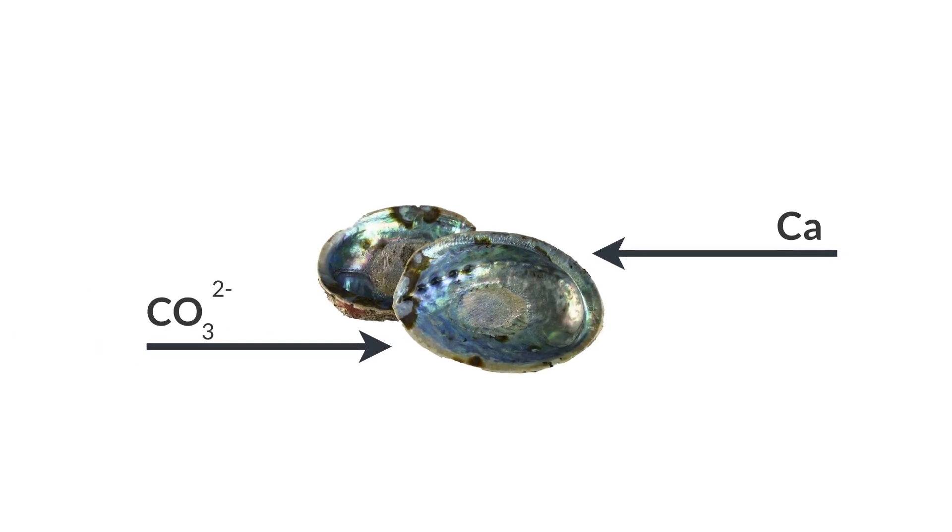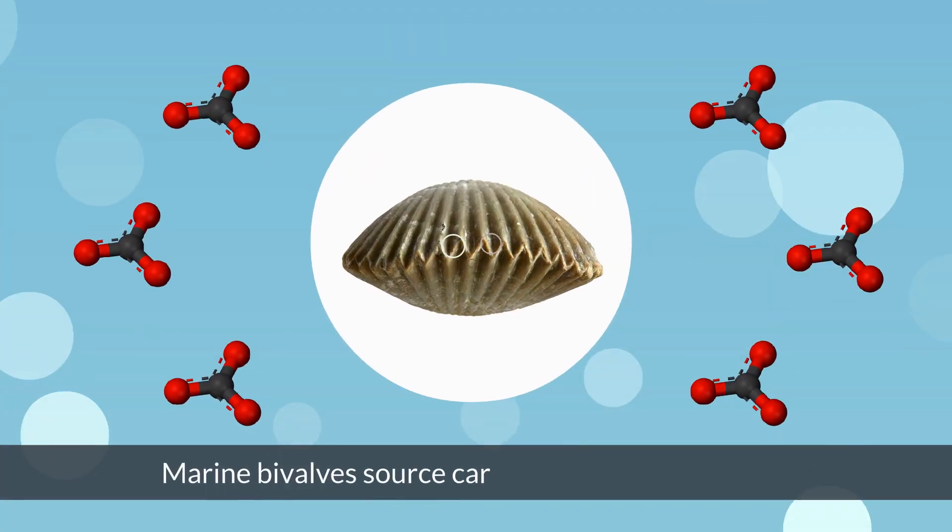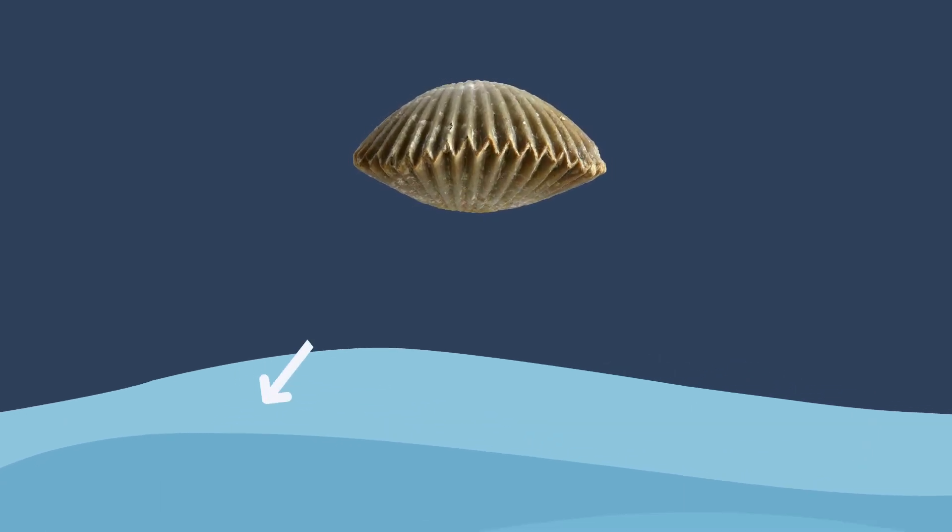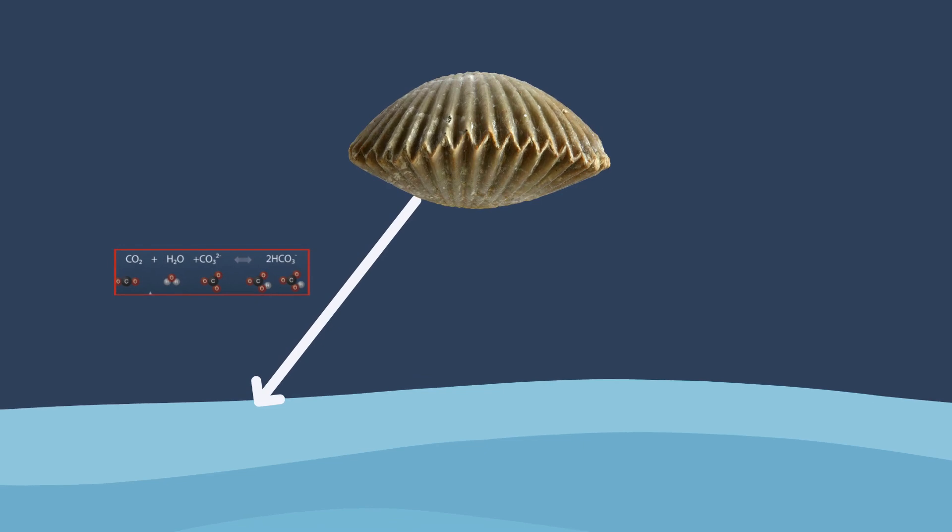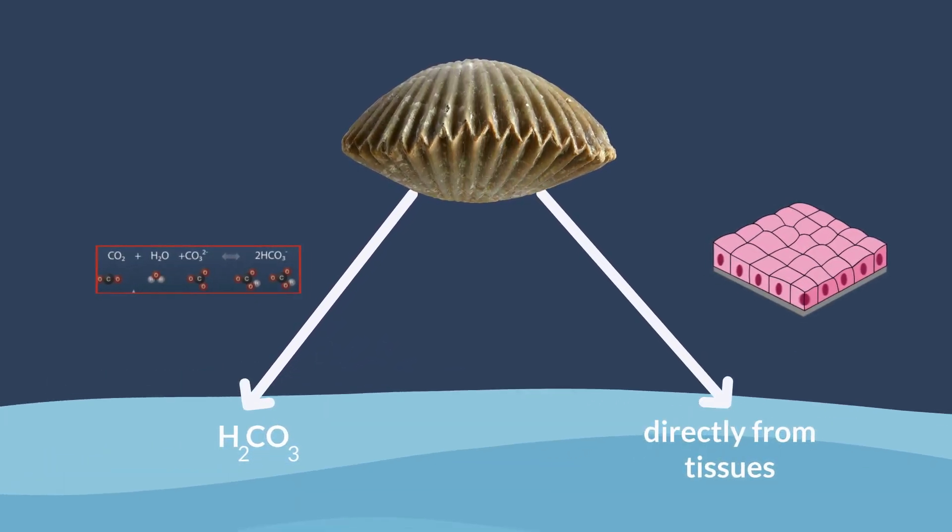Shellfish produce their shells using calcium and carbonate minerals as building blocks, a process that's known as biomineralization. Marine bivalves source carbonate in different ways, either directly from seawater by producing hydrogen carbonate through a protein-mediated process, or directly from tissues through metabolic processes.